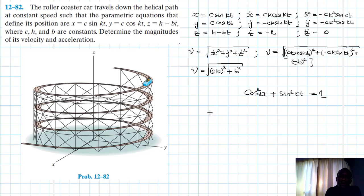So basically this is the velocity: c²k² plus b². Alright, so this is our magnitude of our velocity.